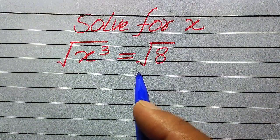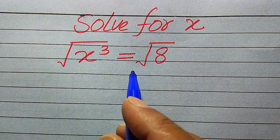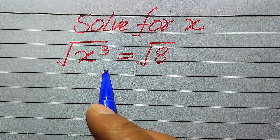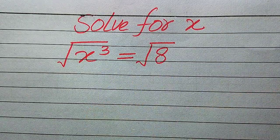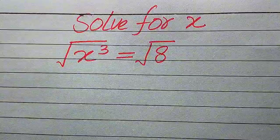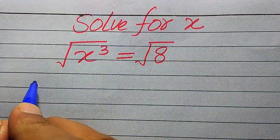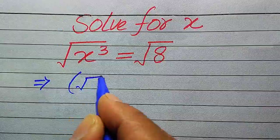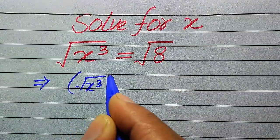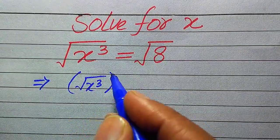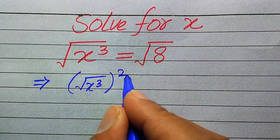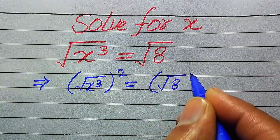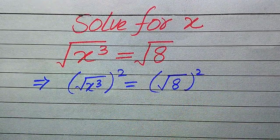Here we need to find all the values of x. First, we need to remove the square root sign from both sides. In order to remove it, we take squaring on both sides, and it will be written as: square root of x cubed, whole squared, equals square root of 8, whole squared.